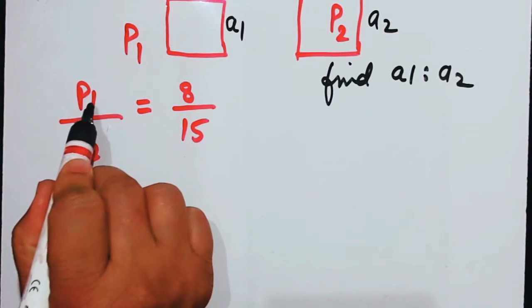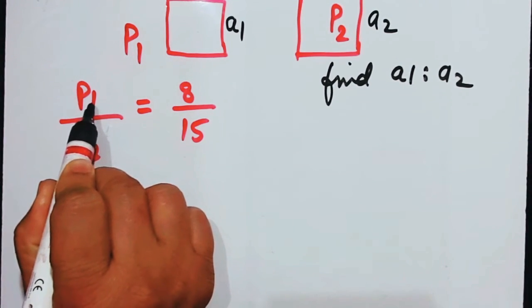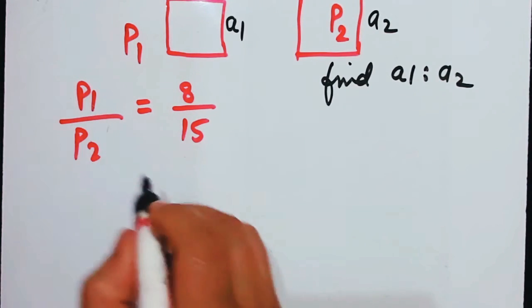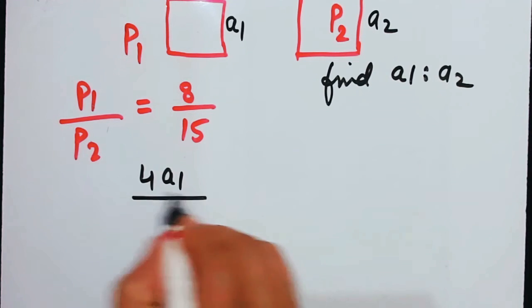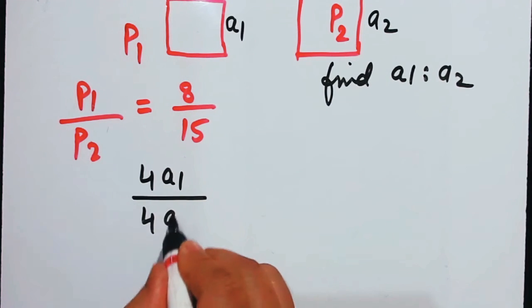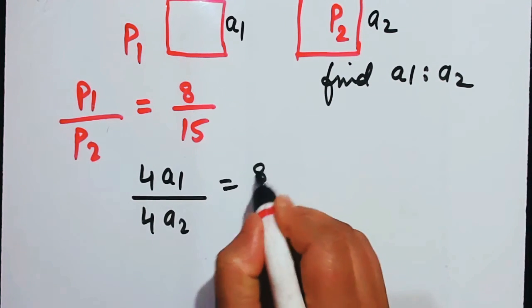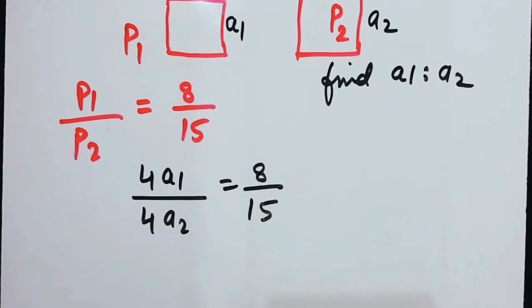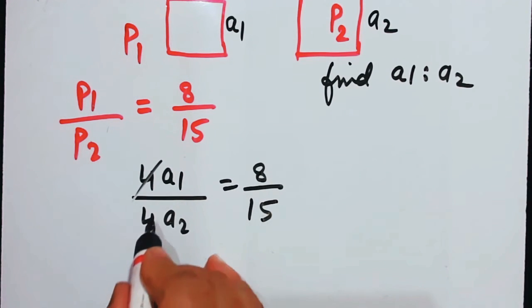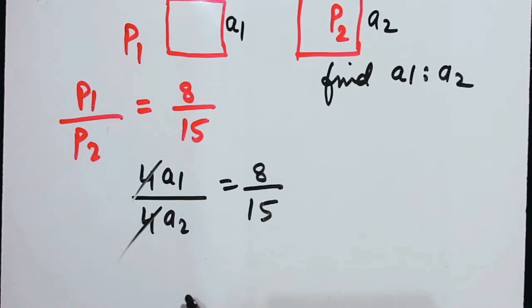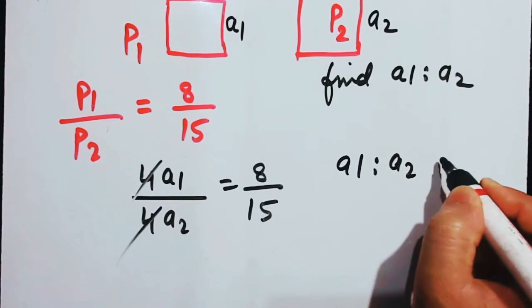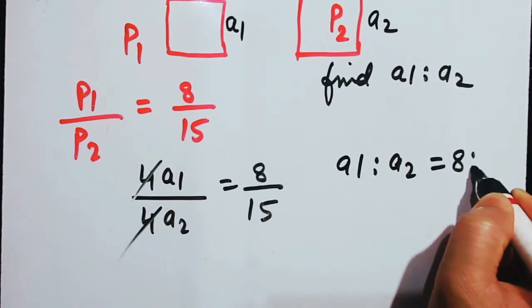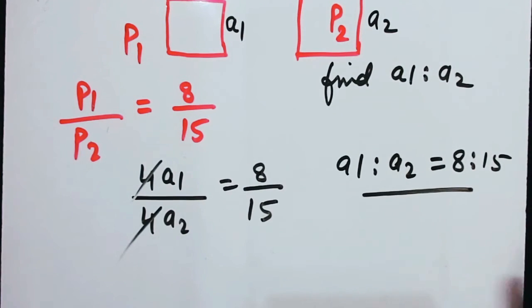P1 can be written as 4A1 and P2 as 4A2, so 4A1 over 4A2 equals 8 by 15. The 4 cancels, giving A1 is to A2 equals 8 is to 15. Simple!